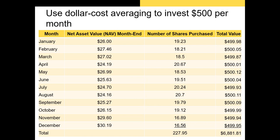Let's look at an example. We have a security whose NAV fluctuates through time. If you're investing $500 in this security, then in January, if the NAV is $26, you're purchasing just over 19 shares. If the NAV rises to $27.46 in February, now you can only afford 18.21 shares. In August, you're buying more shares — 20.7 shares — because the price is lower.